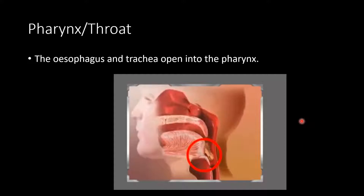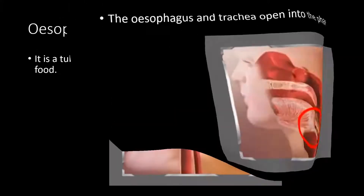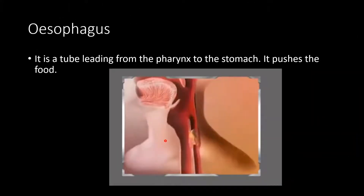Next is the pharynx, or throat. The esophagus and trachea open into the pharynx. Next is the esophagus: it is a tube leading from the pharynx to the stomach, and it pushes the food downward.